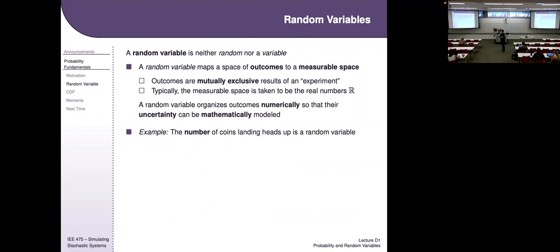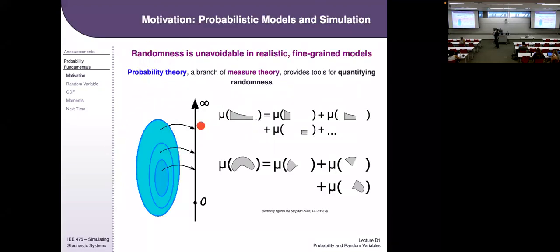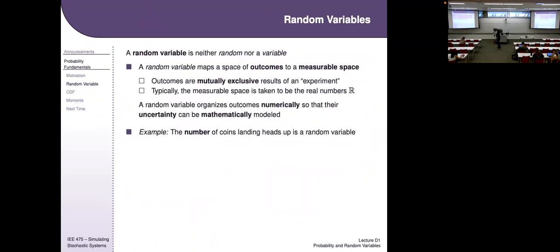A random variable, mathematically, is neither random nor a variable — it's a mapping of outcomes to a measurable space. In order to assign a weight or size to sets, you need a way to take those sets and map them to a number line. A random variable takes outcomes that happen in the real world — like someone arriving at a certain time, or a die coming up four — and maps those outcomes to a numerical representation.